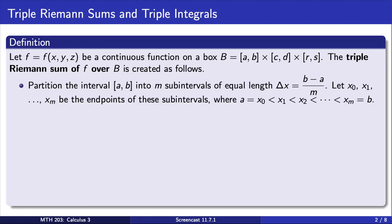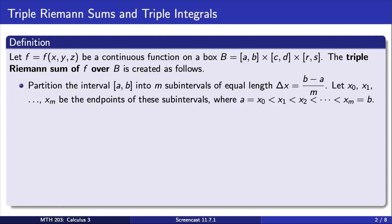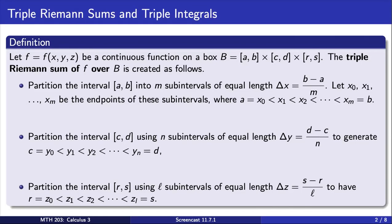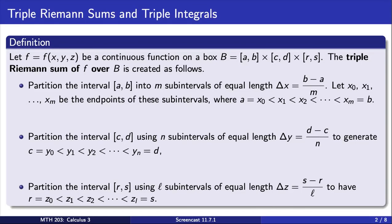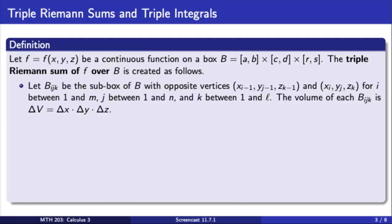We subdivide the x-interval into m equal size pieces. We also subdivide the y-interval into n sub-intervals. We subdivide the z-interval into l sub-intervals. These sub-intervals partition the box capital B into sub-boxes, each with volume delta V.